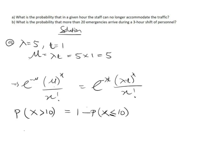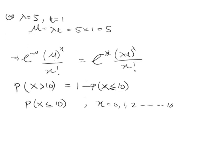We need to find P(X ≤ 10) using the Poisson probability formula, summing from x = 0 to x = 10. Rather than computing each of the 11 terms individually, we can use the Poisson cumulative distribution table, which provides cumulative probabilities and saves significant time, especially when x is large.